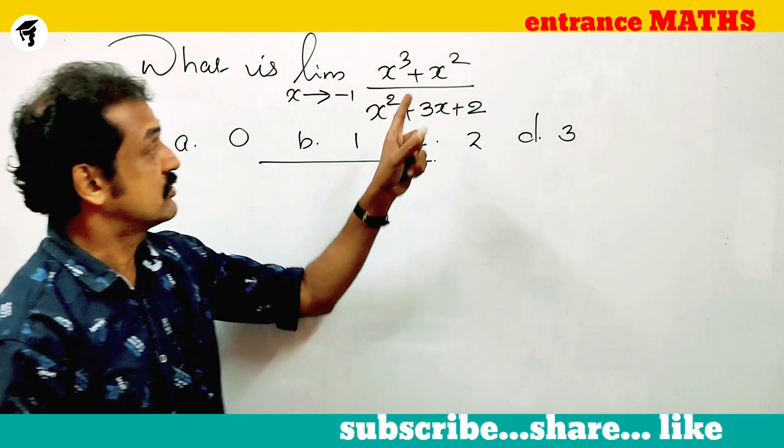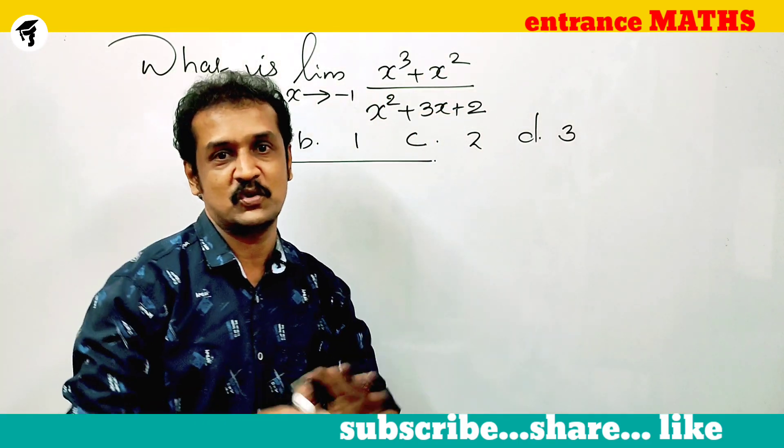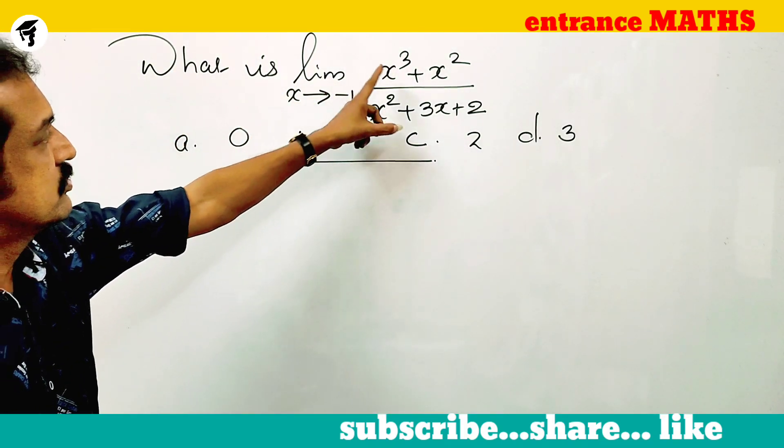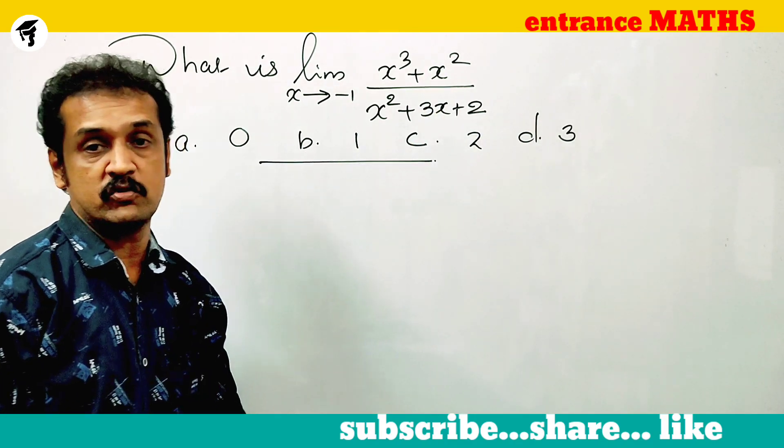What is the limit x tends to minus 1, x cube plus x square by x square plus 3x plus 2. We will directly substitute x equals minus 1.